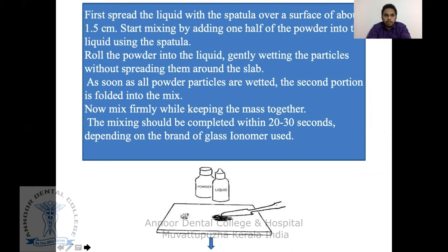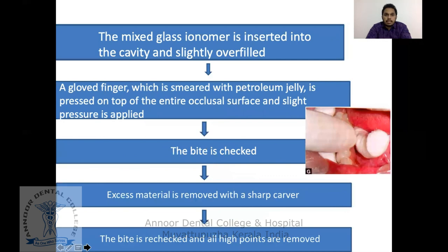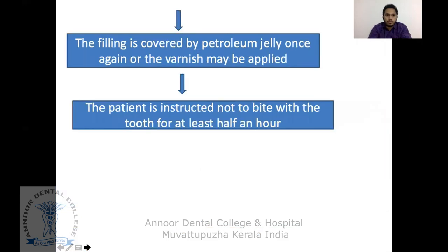Start mixing by adding one half of the powder into the liquid using the spatula. Roll the powder into the liquid gently, wetting the particles without spreading them across the slab. Once all powder particles are wetted, fold in the second portion and mix firmly. Mixing should be completed within 20 to 30 seconds depending on the brand of glass ionomer used. The mixed glass ionomer is then inserted into the cavity, and a finger mirrored with petroleum jelly is pressed on top with slight pressure applied. The bite is checked, excess material is removed with a sharp carver, the bite is rechecked, and the filling is covered with petroleum jelly or varnish.